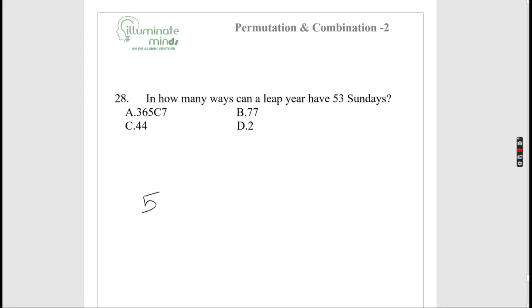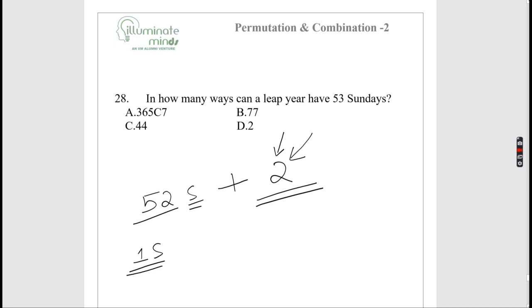In how many ways can a leap year have 53 Sundays? A leap year has 366 days = 52 weeks + 2 extra days. The 53rd Sunday can fall on the 1st or 2nd extra day of the year. So there are 2 ways.